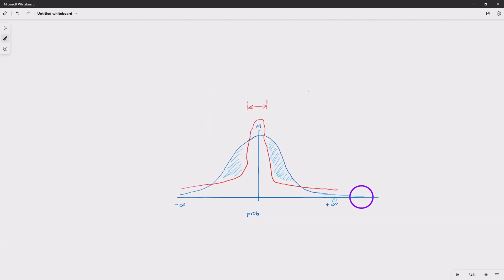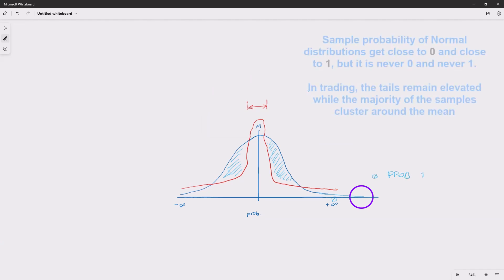That's why the probability range is always between zero to one, but it is never zero and it is never one. Because these lines get very close but they never touch.